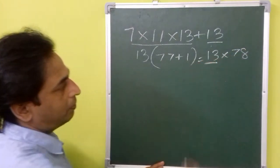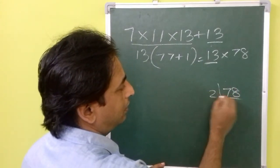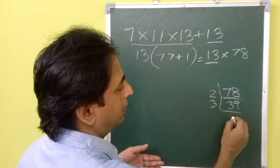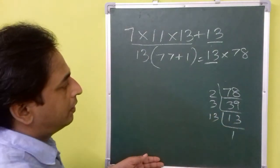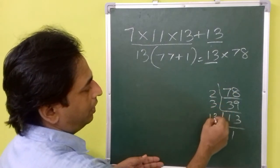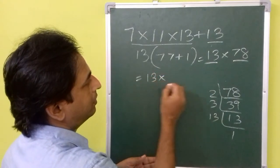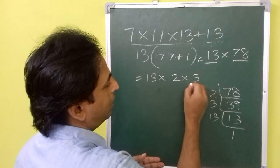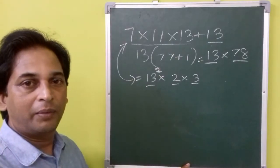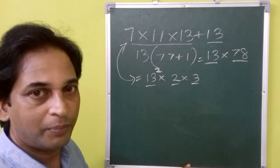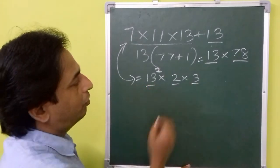Now 13 is already a prime number and 78 is not, so let us factorize 78. That means we can write 78 as 2 into 3 into 13. That means we can rewrite this as 13 times 2 times 3 times 13. That means we can make it 13 square. As per the fundamental theorem of arithmetic, every composite number can be expressed as a product of primes. That means here this number is written as a product of primes, so this is a composite number.